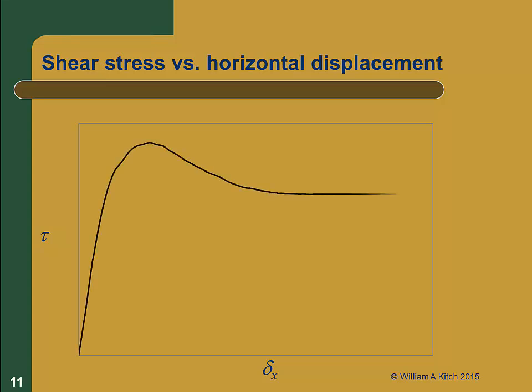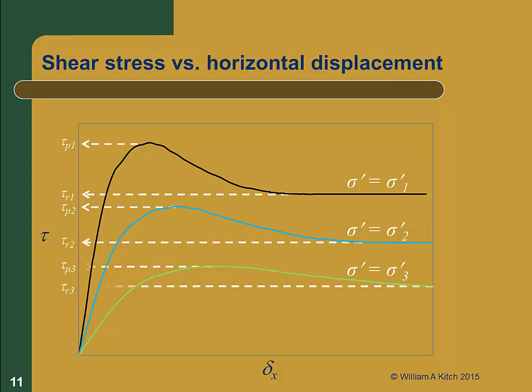Here we see in black, shear stress as a function of horizontal displacement for one test run at a high normal stress sigma1, a second test shown in blue was run at an intermediate normal stress sigma2, and a third test shown in green was run at a low normal stress sigma3. For each of the three tests, we can determine the peak and residual strengths, as seen here.